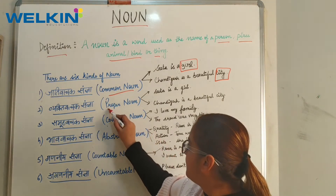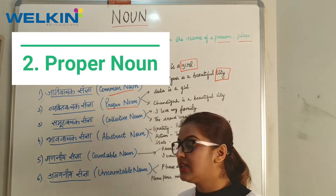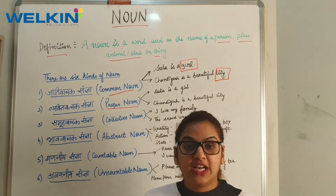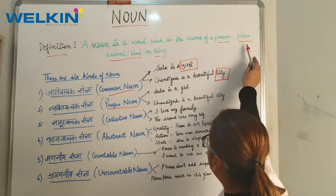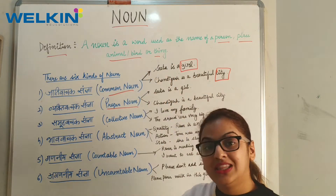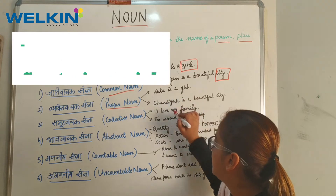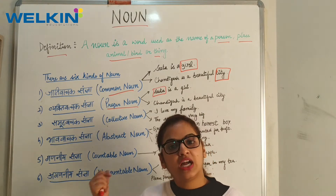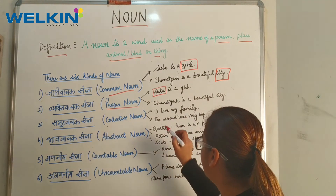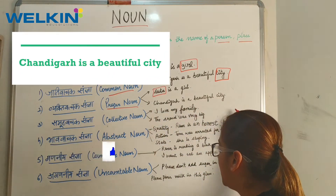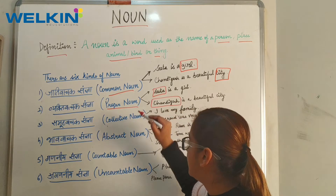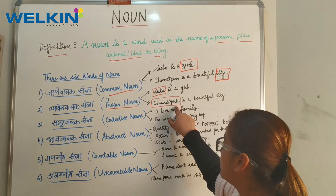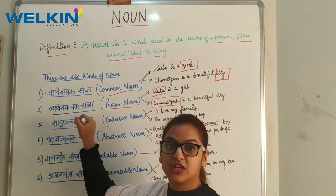Next is Proper Noun. Proper Noun is called Vyakti Vachak Sangya in Hindi. Jahan pe aapko specifically name mentioned ho — person ka, place ka, animal, bird ya phir thing ka. For example: Sita is a girl — 'Sita' is a specified name, so it is a proper noun. Similarly, Chandigarh is a beautiful city — 'Chandigarh' is a specified place name, so it is a proper noun — Vyakti Vachak Sangya.